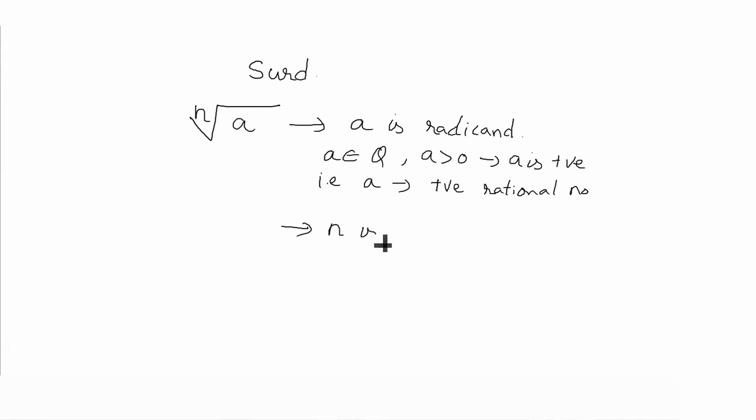Let us revise the concept of surd. As we have seen in previous video, nth root of a is the form of surd or general form of surd. Here, a is called as radicand. Such that a belongs to rational number and a is a positive number. So, you can say that a is a positive rational number. The second condition is n which is order of surd.